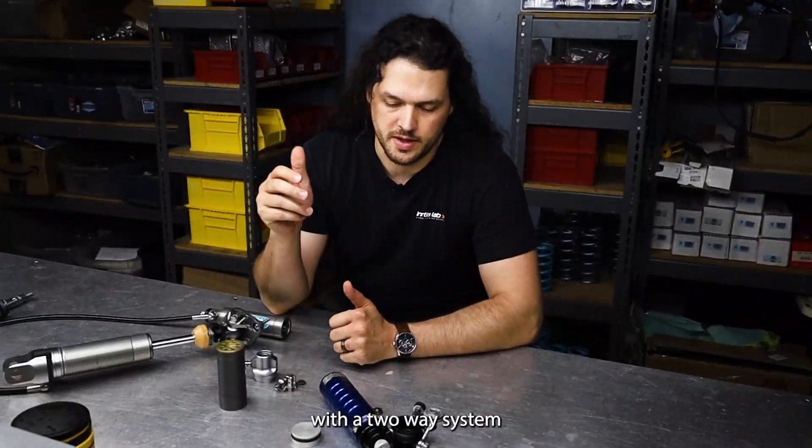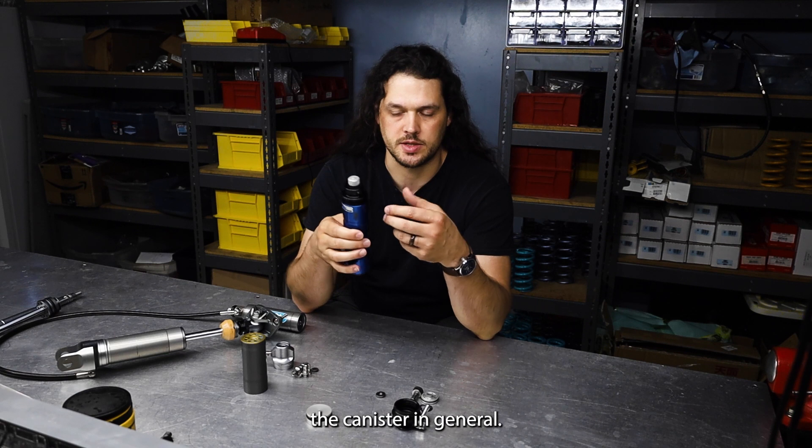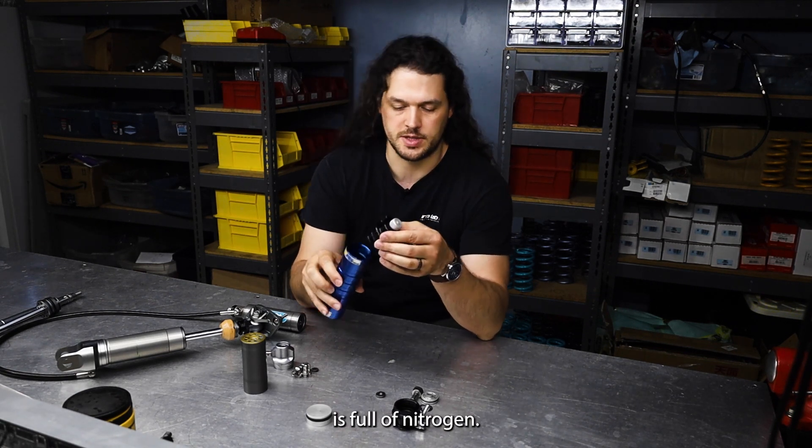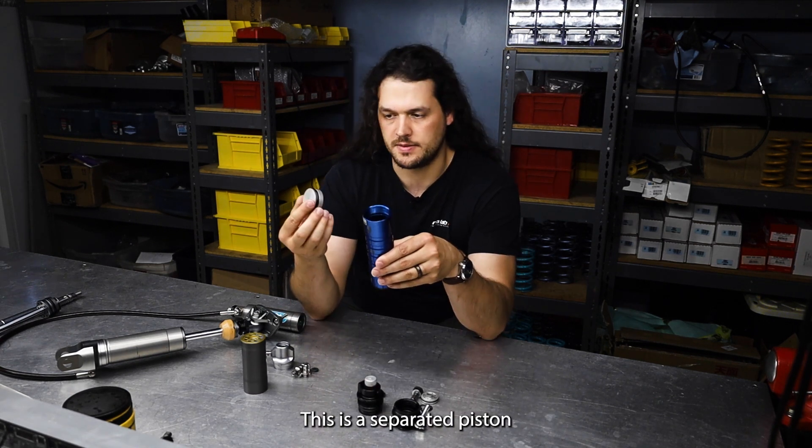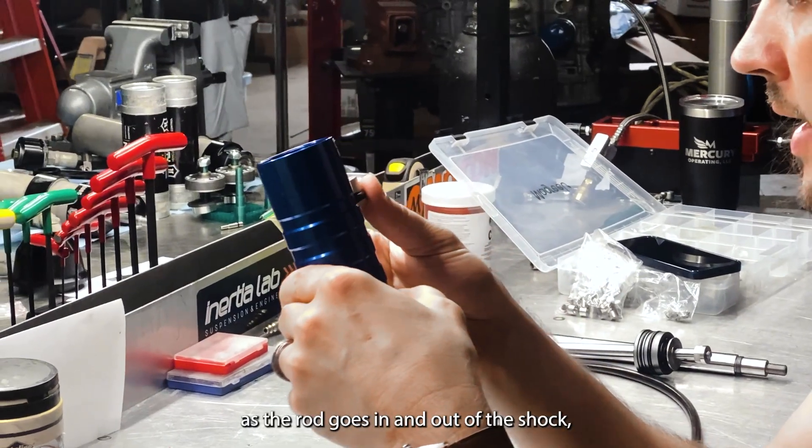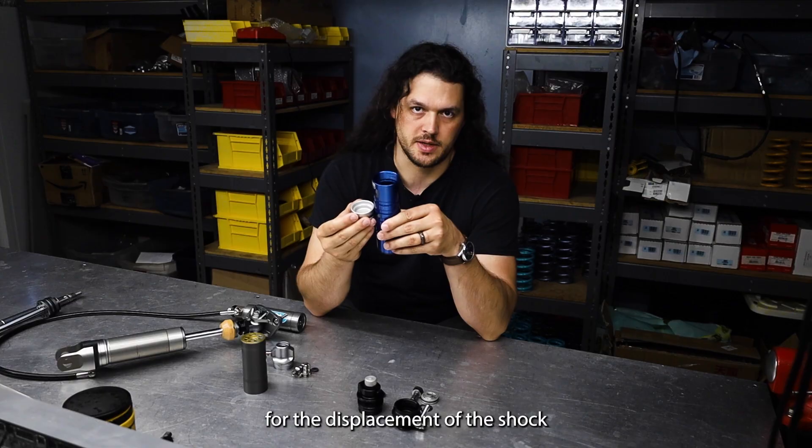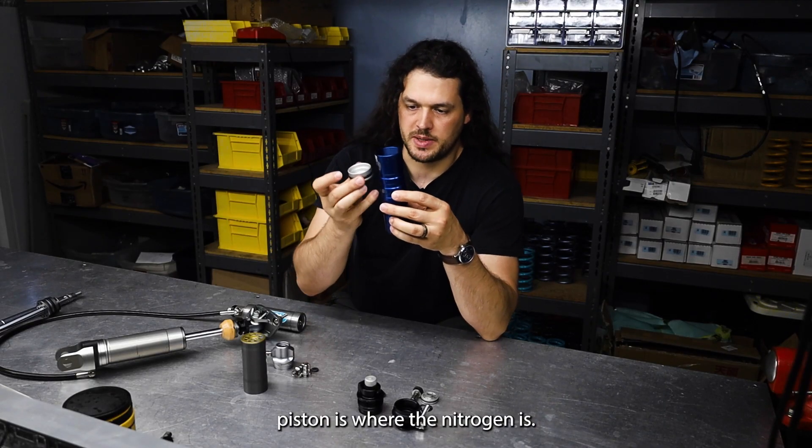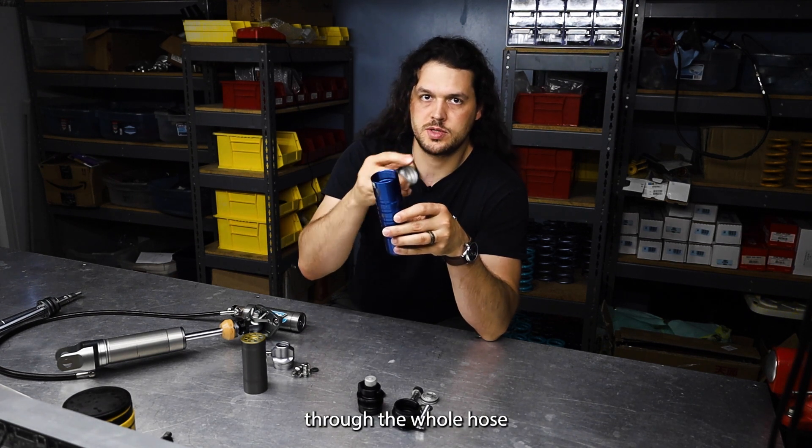So we're gonna start off with the two-way system first. I want to show you what's inside the canister in general. Sometimes people are confused and think that this whole thing is full of nitrogen. This is essentially the reservoir. Within this is a separator piston which goes about like that, and as the rod goes in and out of the shock it moves down slightly to compensate for the displacement of the shock rod. Volume below this separator piston is where the nitrogen is. Everything above it through the whole hose and into the shock is full of oil.